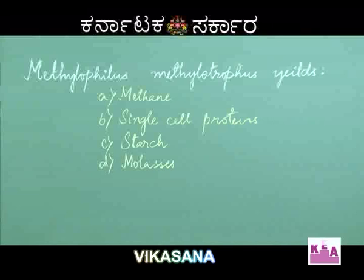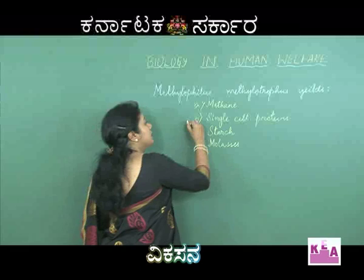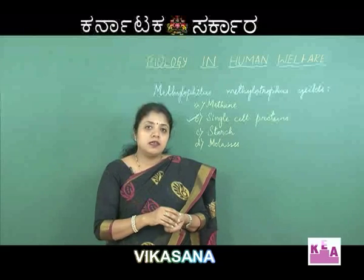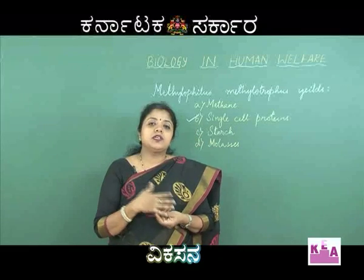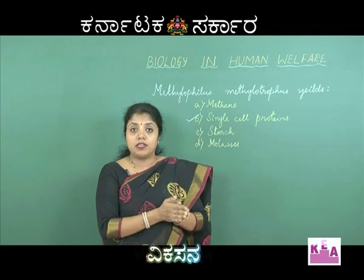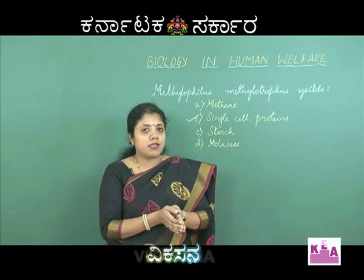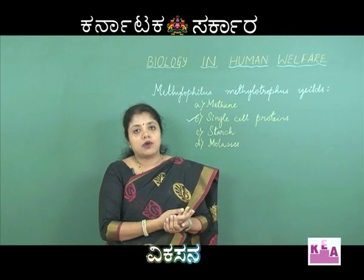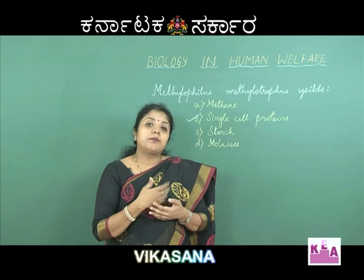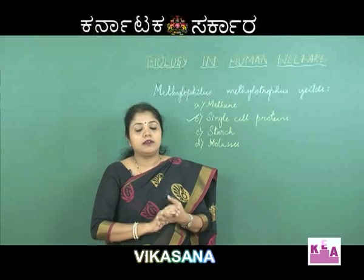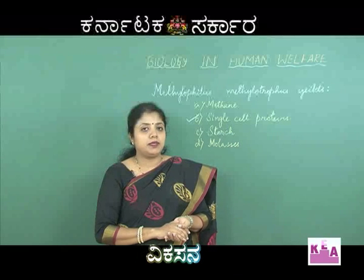The obvious answer is that Methylophilus methylotrophus yields single cell proteins, and option B is the right answer. It is worth noting that 250 kg of cow yields about 200 grams of proteins, whereas 250 grams of this particular organism can yield up to 25 tons of proteins. Single cell proteins are gaining popularity because they can be utilized to supplement people with nutrition deficiencies.